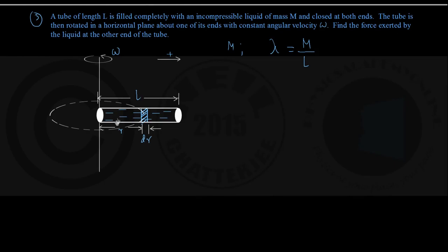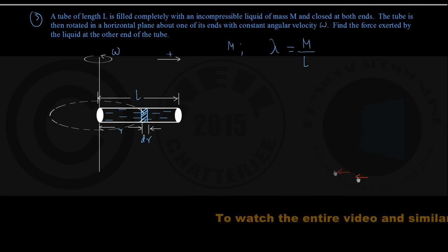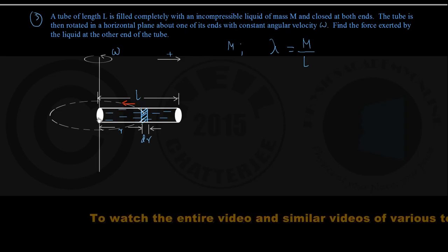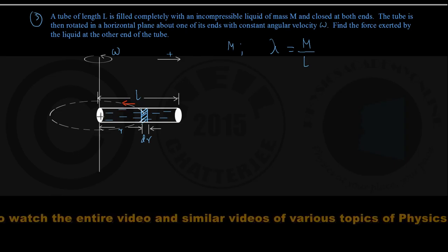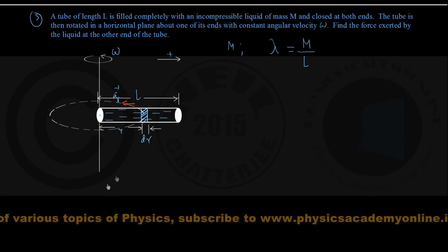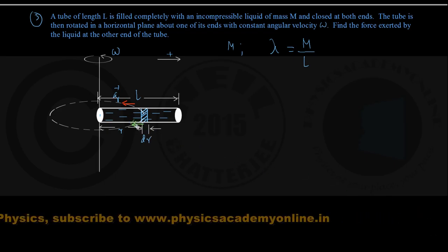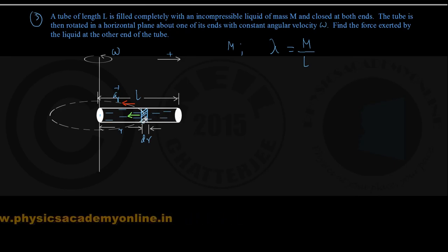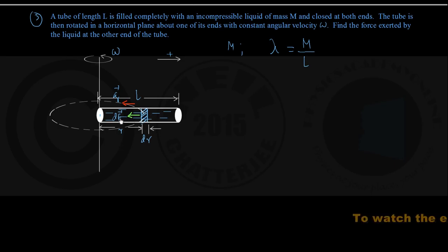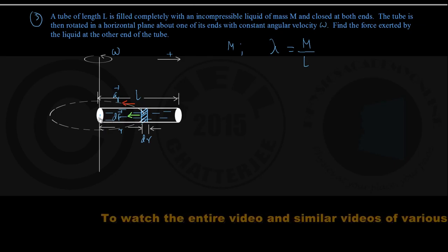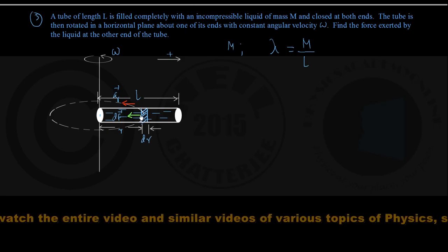A liquid element rotates at radius R about the axis and therefore must possess a centripetal acceleration AR directed radially inward towards the center of the circle lying on the axis of rotation. There must be a centripetal force exerted by the tube on the liquid element. I am calling that differential force DF — a differential force because the element has infinitesimal mass. DF is the force exerted by the tube's right end onto the liquid element to create acceleration AR.